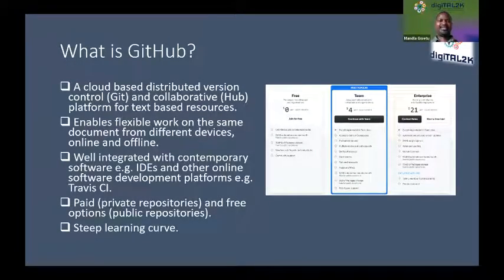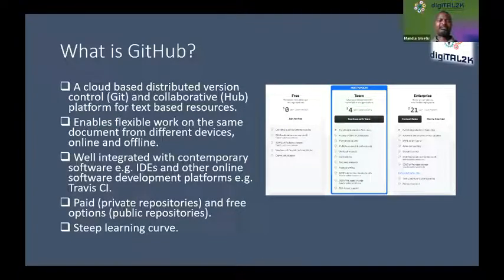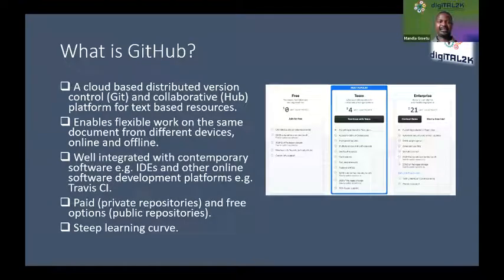Version control allows you to have snapshots of a document such that at any point, if you make a mistake and would like to roll back to a previous version, you can actually do that. It's a more sophisticated version of an undo button in Microsoft Word. From a quality assurance perspective, this is part of best practice in software development. Operating systems like Windows 10 and Windows XP each had a version informed by different bugs and updates — so they have to keep track of those and manage them properly.